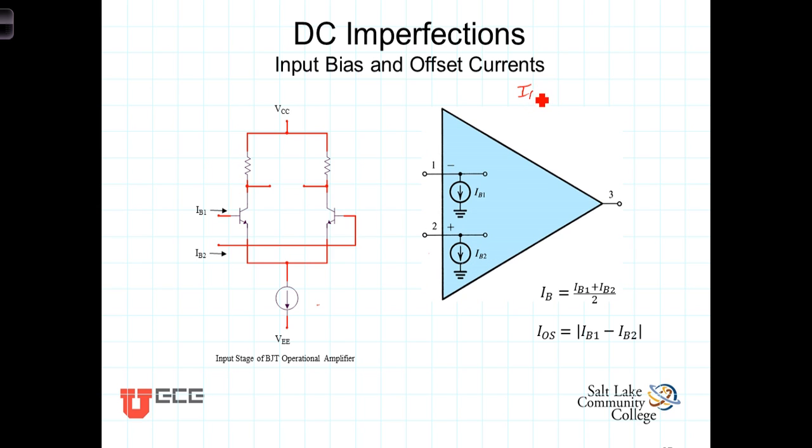IB1 and IB2 are called input bias currents.